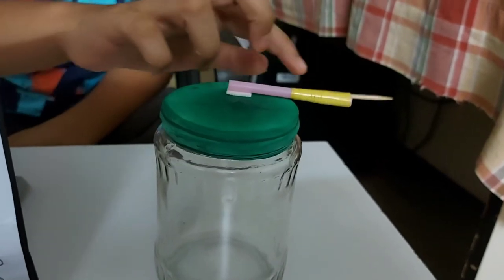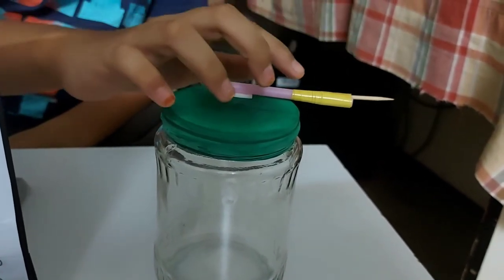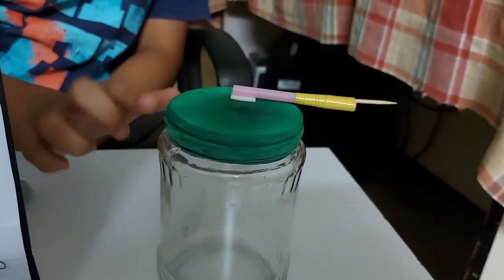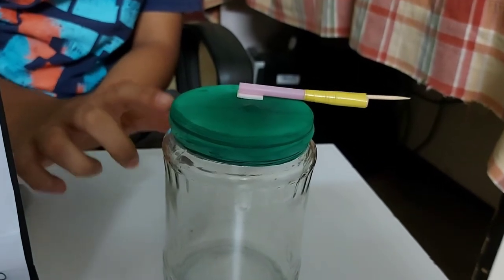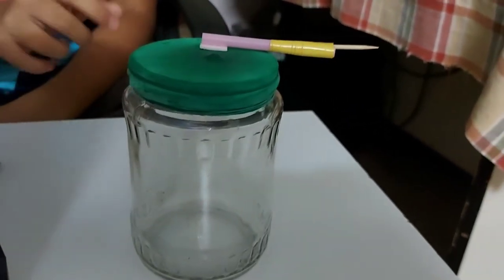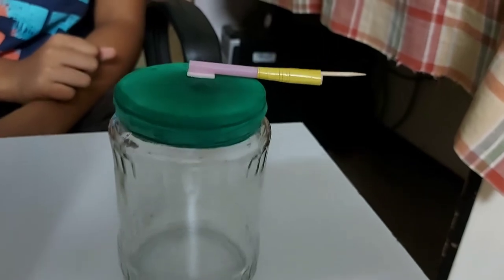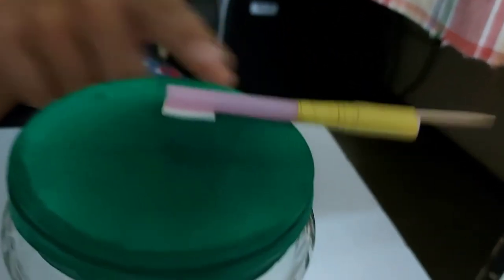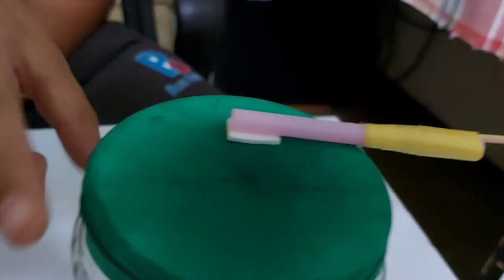To make a simple barometer, cut the neck of the balloon. Stretch the balloon over the jar. Hold it in place with the rubber band. Tape the toothpick to the end of the straw. Tape the other end of the straw to the center of the balloon lid.